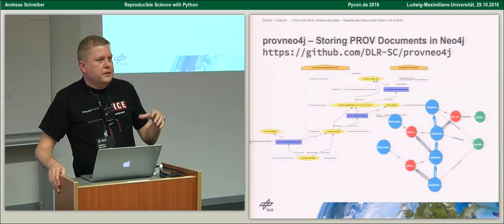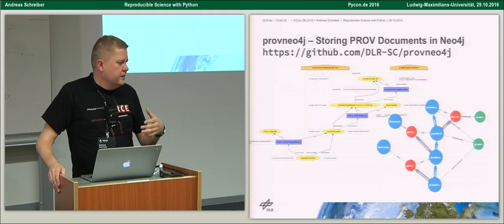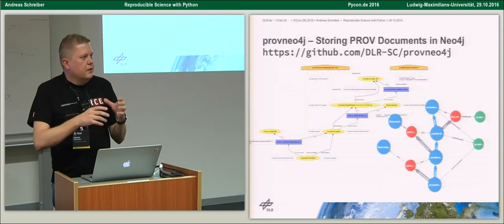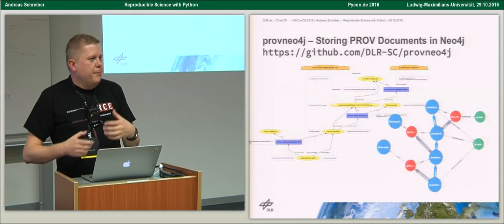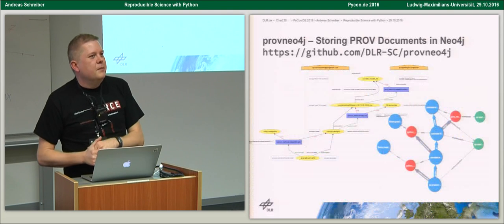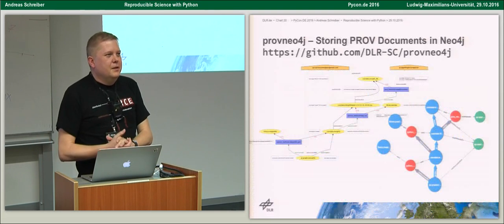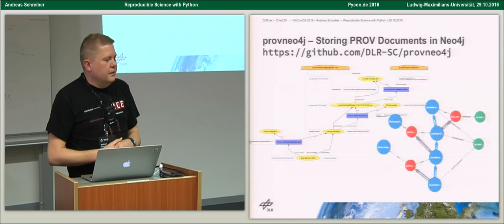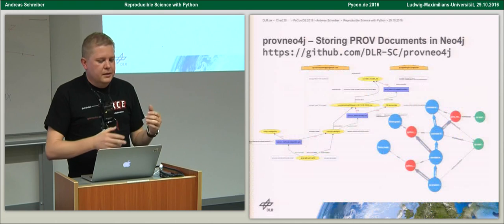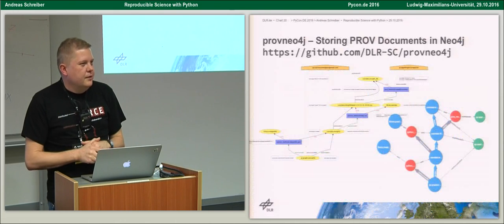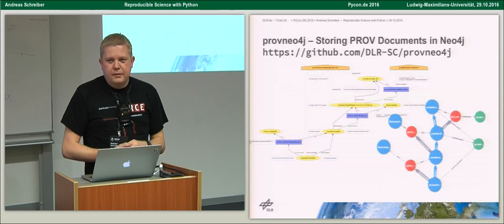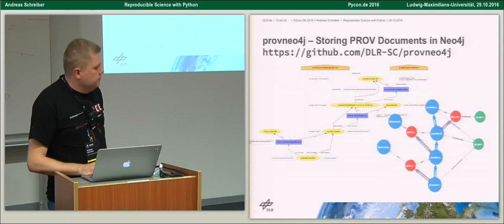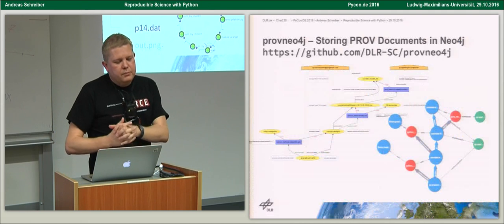We have a real use case — though we cannot show pictures because we use it with industry. In a publicly funded project with a large manufacturing company in Munich, we stored the provenance information of their development process. Then something happened: an engine switched off during a flight. They used the provenance information to trace back through the development process and found that something had been changed in the development department without notification.